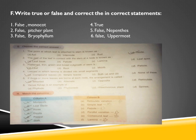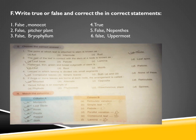Match the following: Monocots — parallel venation. Leaf blade — lamina. Rose — compound leaf (rose does not have a simple leaf; it has a compound leaf). Dicots — reticulate venation. Peepal — simple leaf. Stalk — petiole.